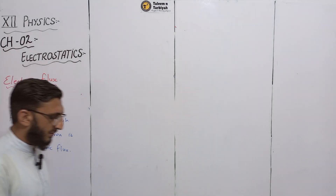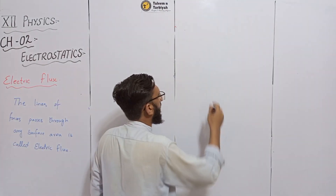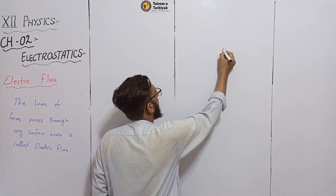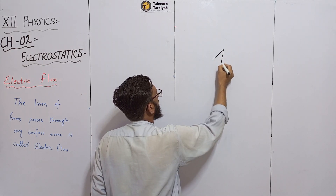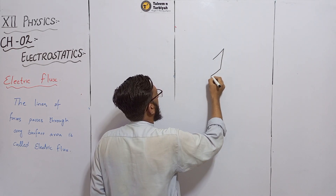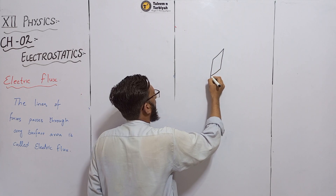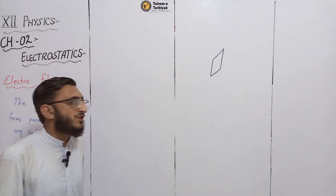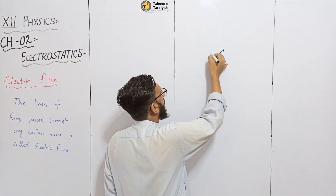Now I'll show you the diagram. This is our area. If there is an electric field, then there will be lines of forces passing through any surface area.